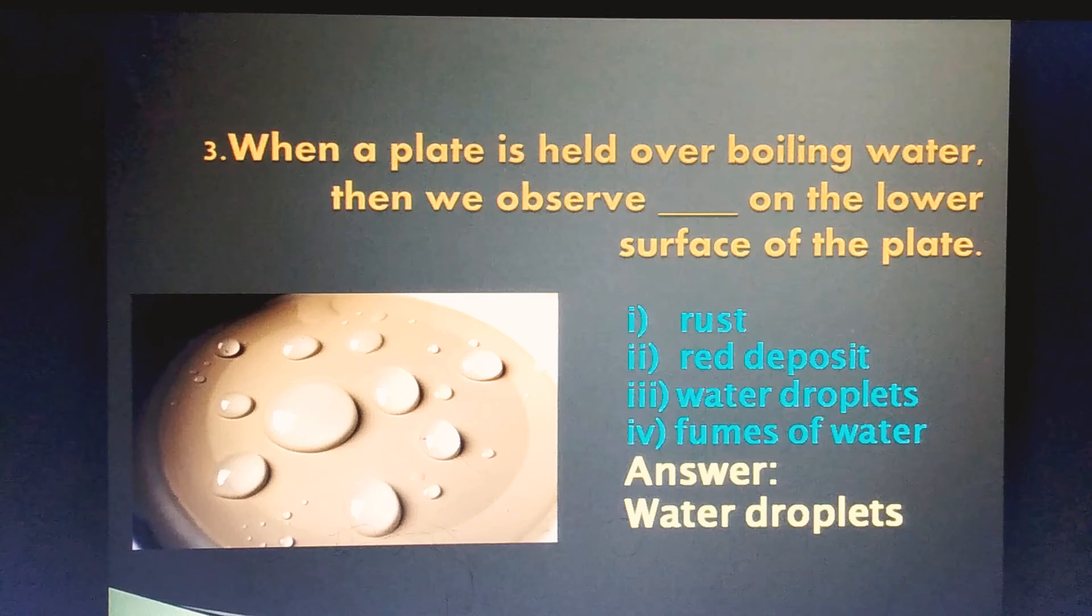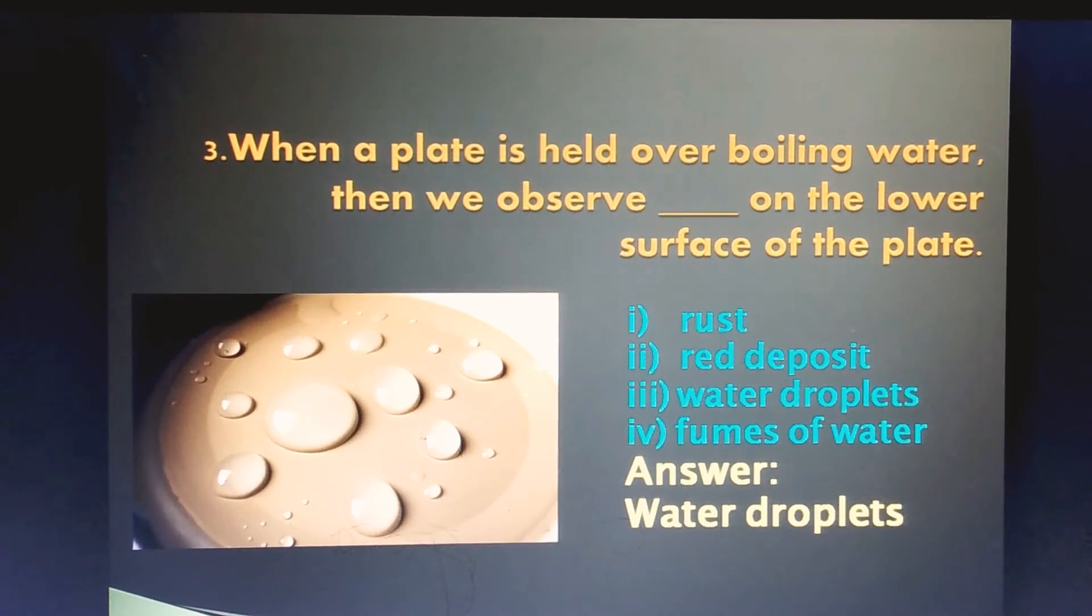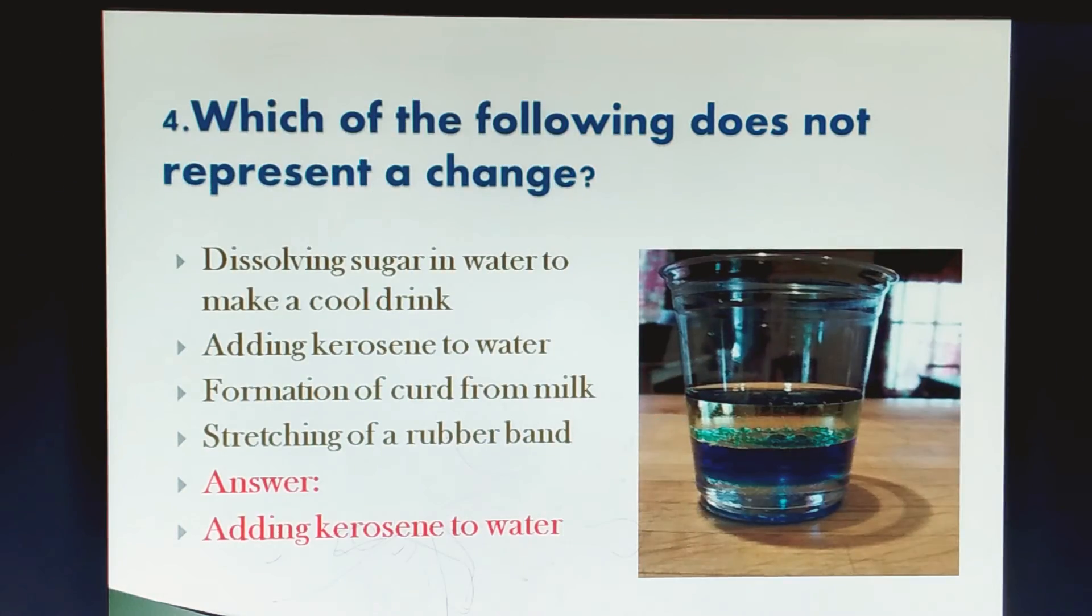When a plate is heated over boiling water, then we observe blank on the lower surface of the plate. Definitely we observe water droplets.